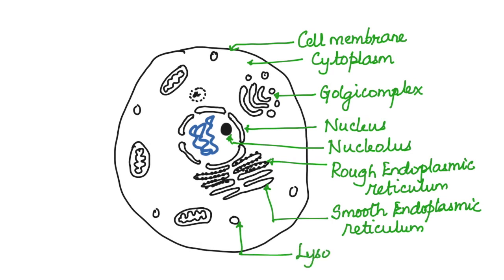The main organelle other than the nucleus is the mitochondria. The mitochondria is known as the powerhouse of the cell, which is responsible for production of ATP.